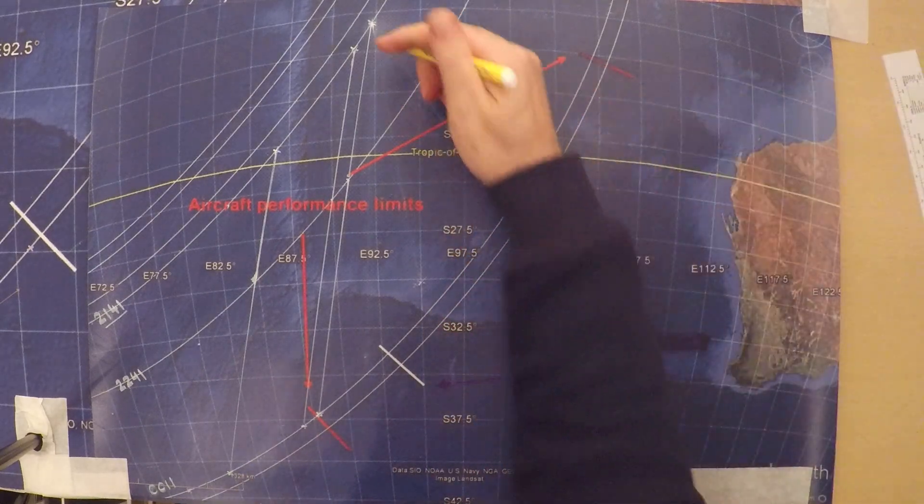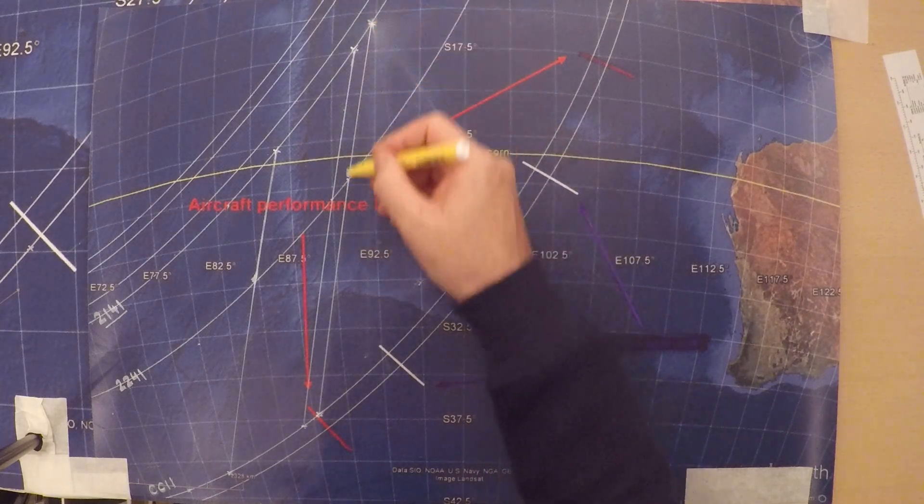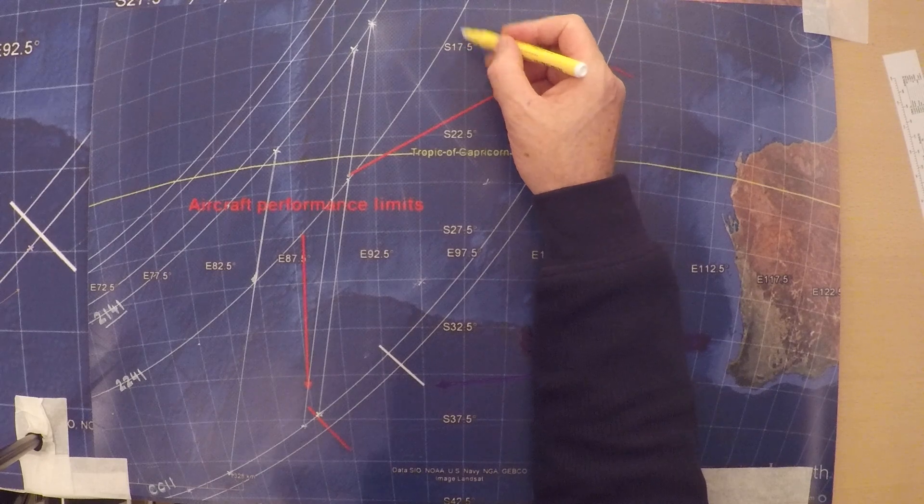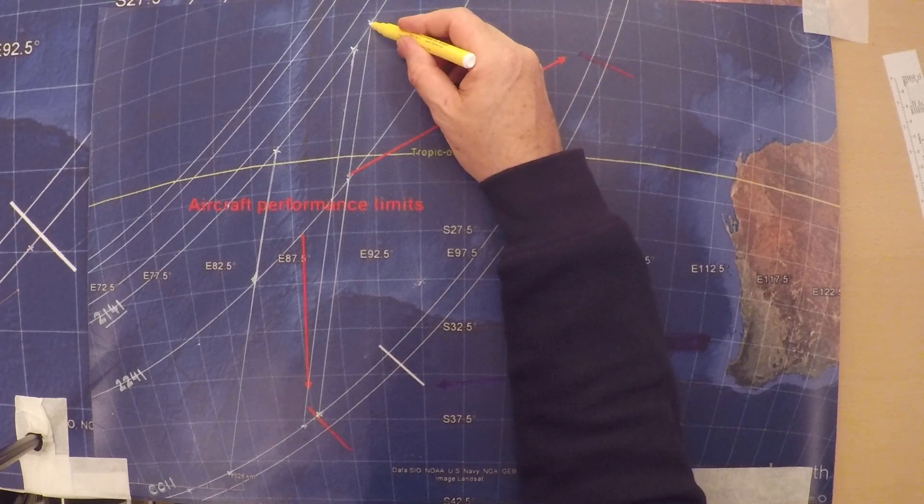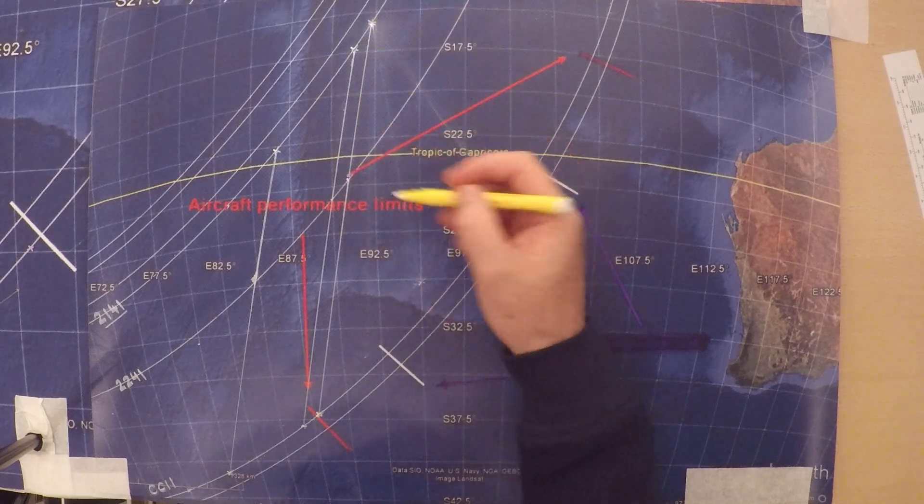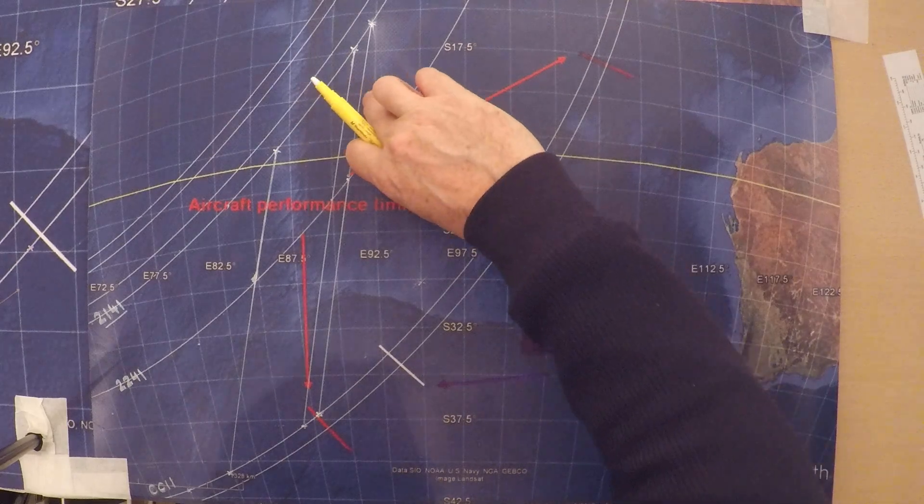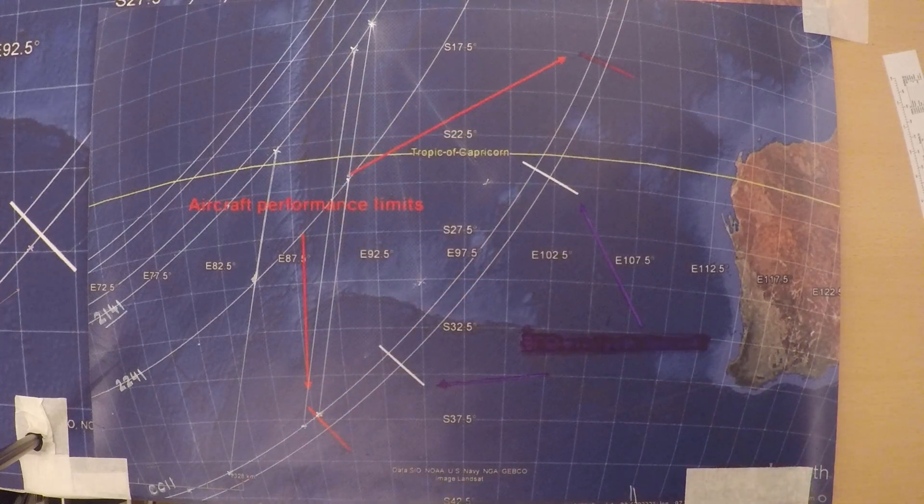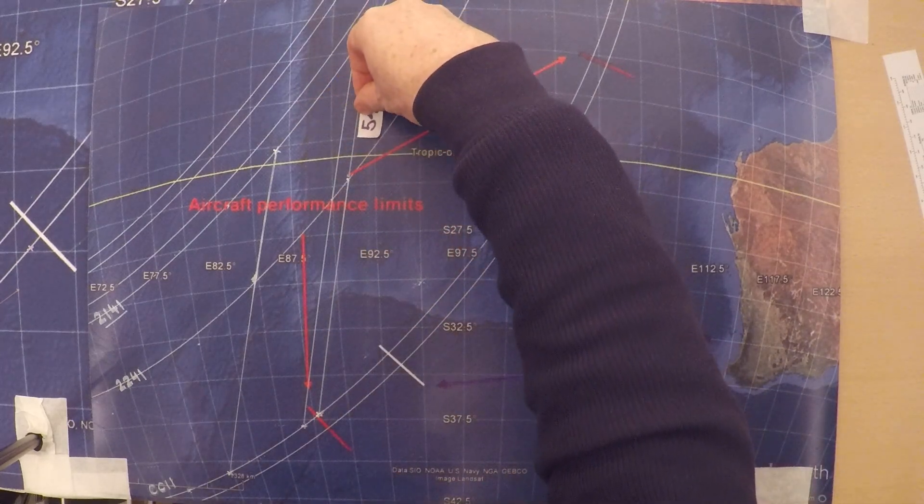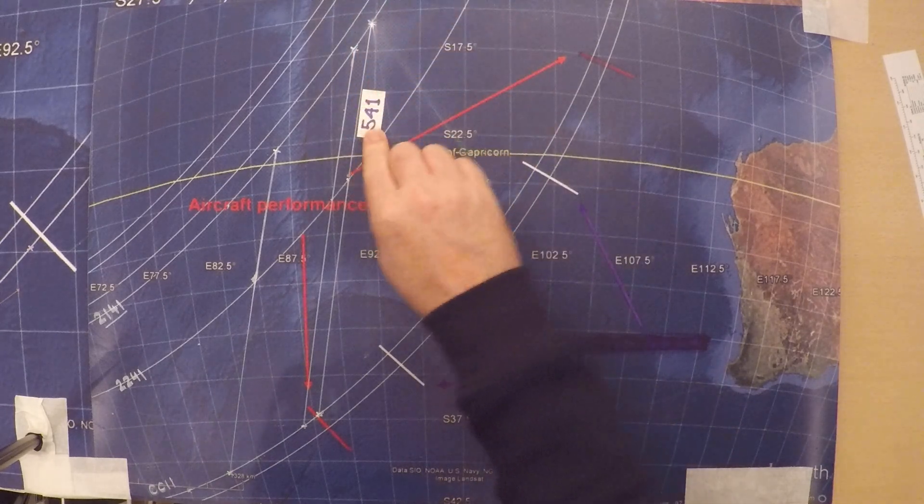So we measured these lines and each of these lines represents a distance on the Earth's surface. And it represents one hour. So the speed is given by the length of this line. And this line is five hundred and forty-one nautical miles long. That one. So that means it's five hundred and forty-one knots. Because that's an hour. One hour from fourth to fifth arc.